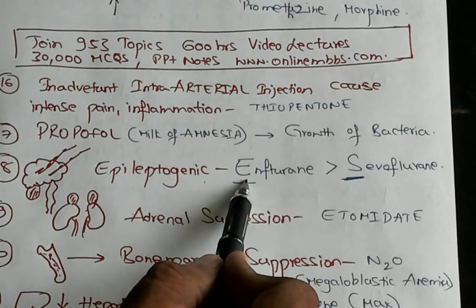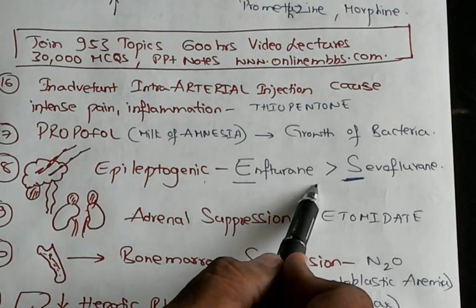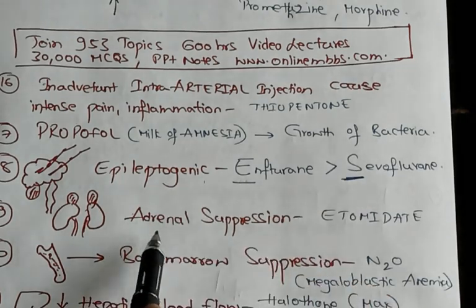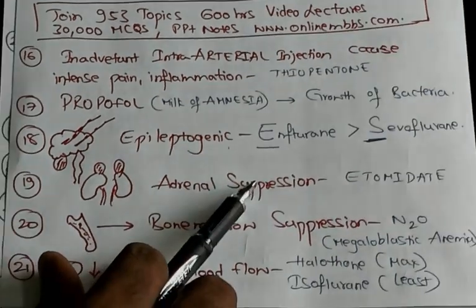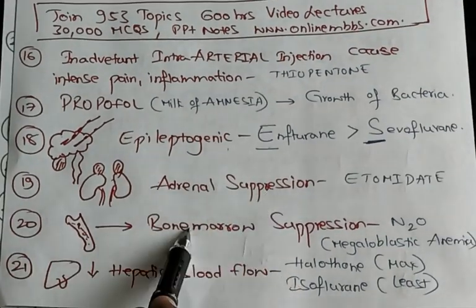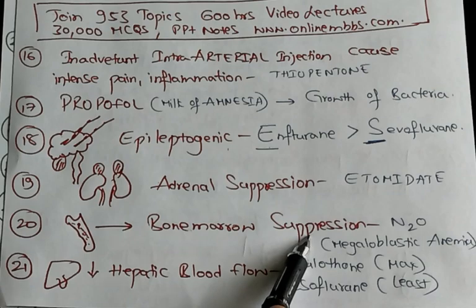Sevoflurane is more epileptogenic than other agents — that is what you should remember. Also remember two suppressions: adrenal suppression, caused by etomidate, and bone marrow suppression.